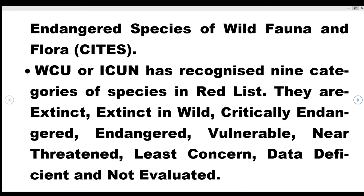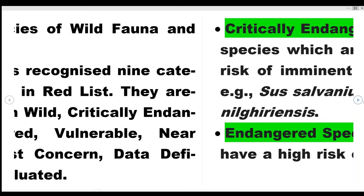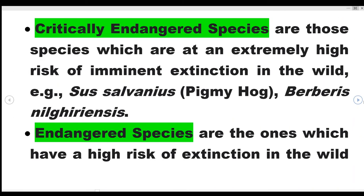Critically Endangered species are those which have a very high risk of imminent extinction in the wild. Examples include Pygmy Hogs (Sus salvanius) and Berberis nilghiriensis. These are critically endangered species — they are extremely at risk in the wild.